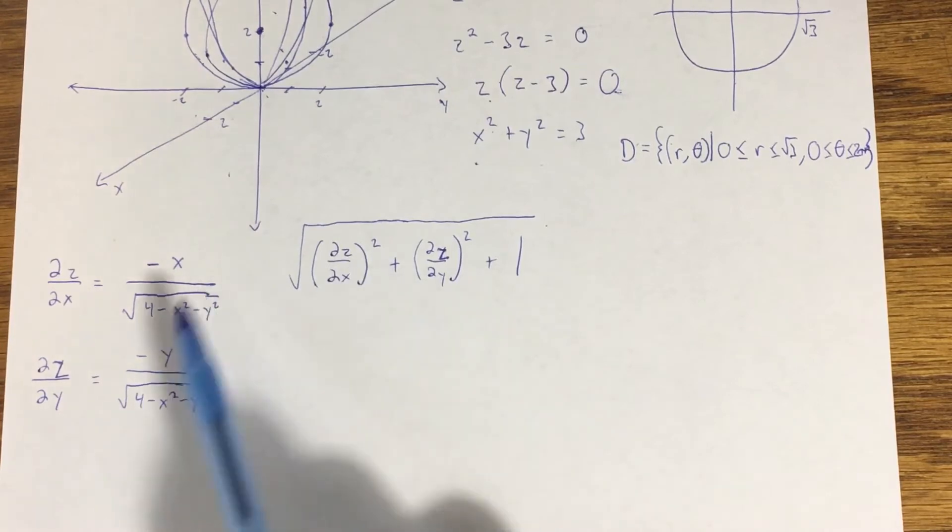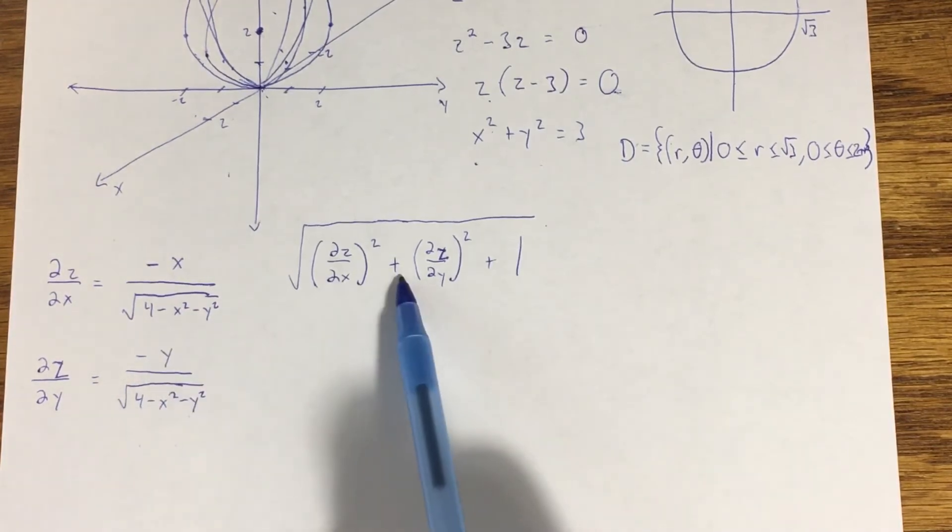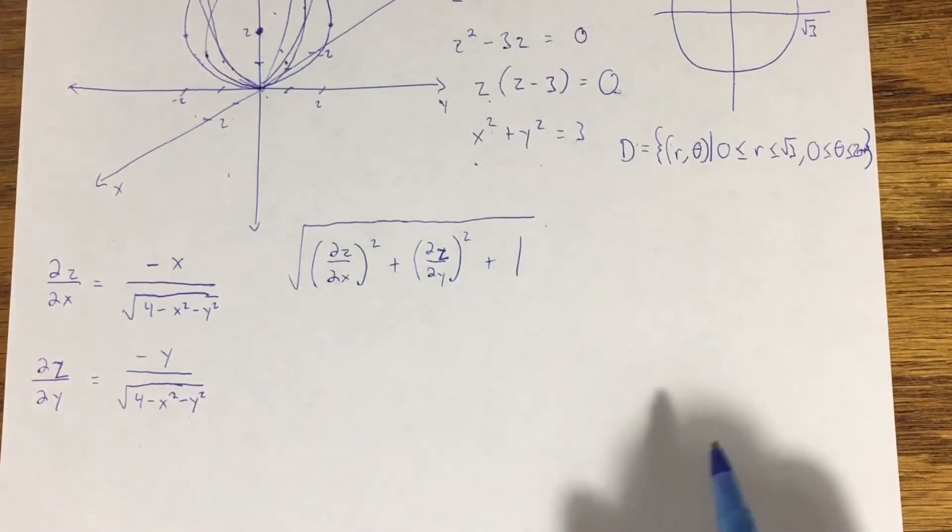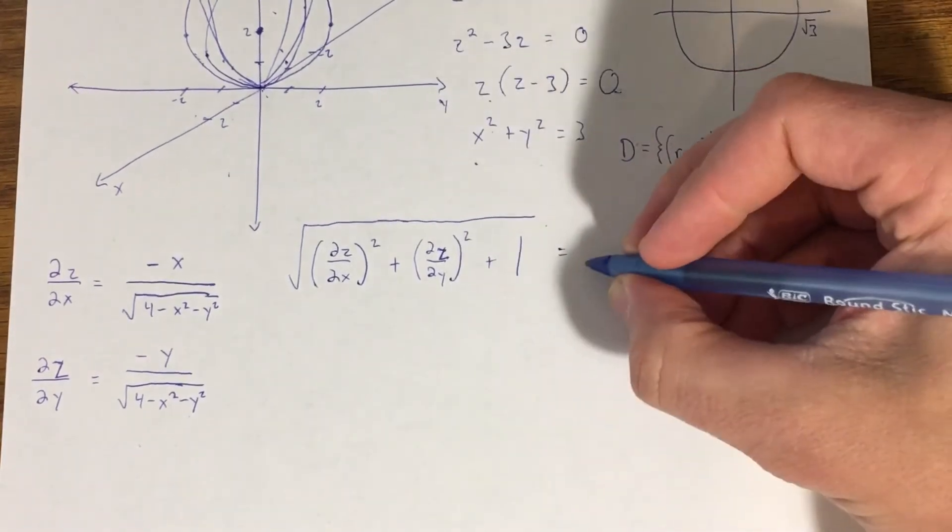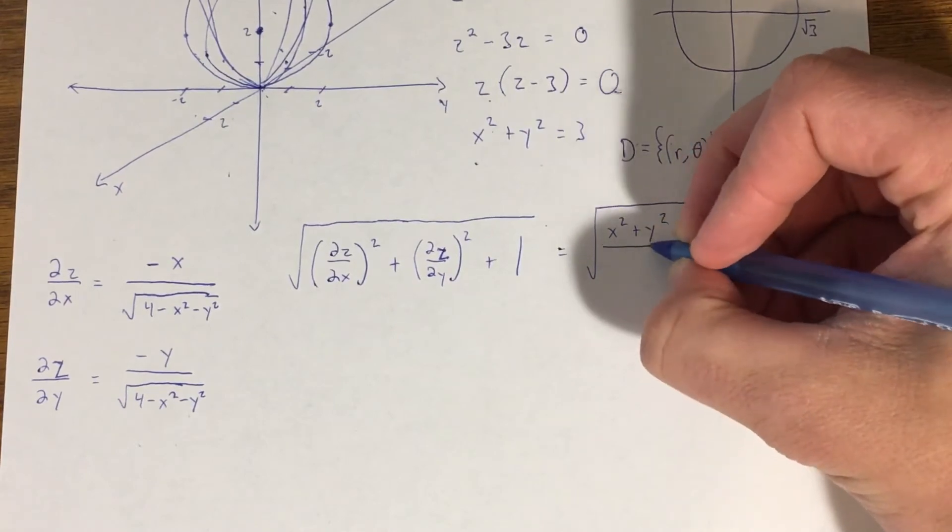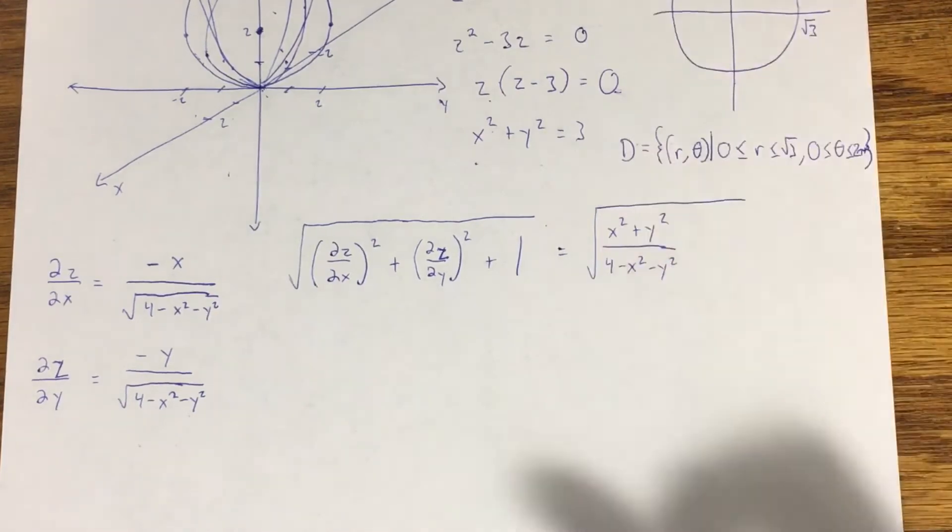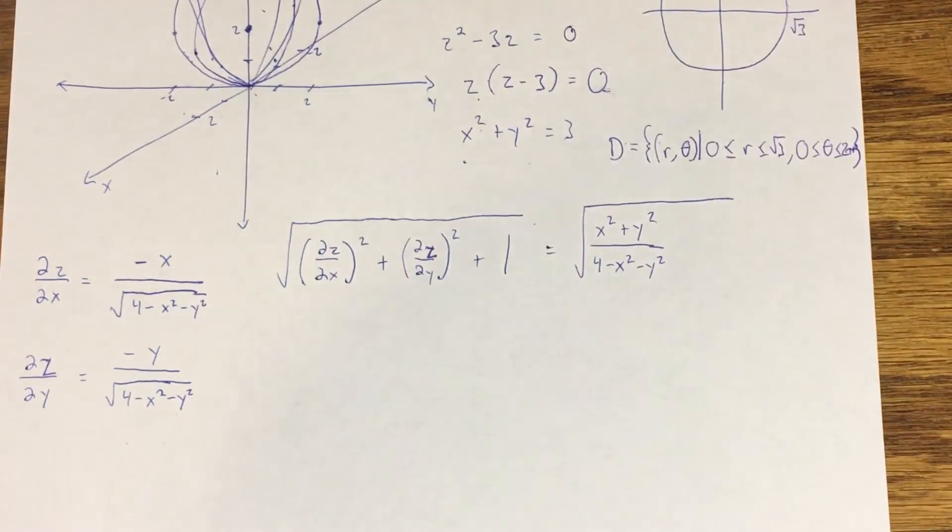Going through some of the steps ahead of time, notice if I were to square each one of these I'll get an x squared in my numerator here, a y squared in my numerator here, and then the radical in both of these is going to go away. I'm left with four minus x squared minus y squared as a common denominator. When I add these two things it's just going to give me x squared plus y squared over four minus x squared minus y squared.